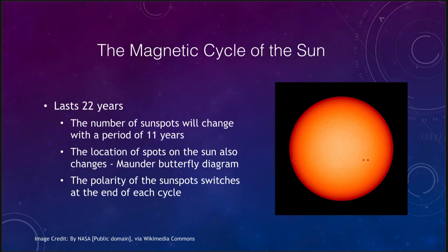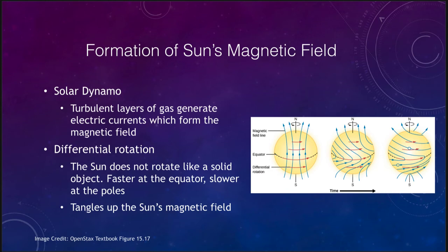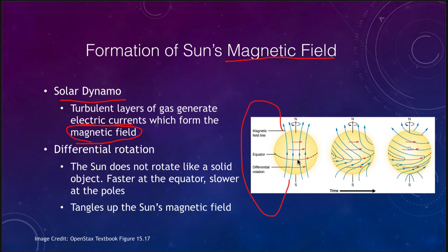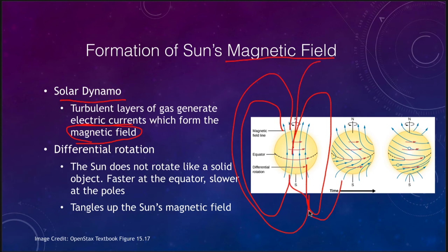Let's look a little bit at how this works — what is going on inside the sun that is actually causing this to occur. The sun's magnetic field, which is the underlying cause of all of this activity, is formed by what we call the solar dynamo. This is the layers of gas underneath the sun which generate electric currents that, when rotating, form a magnetic field. Normally, a magnetic field looks like this: you have the south magnetic pole and the north magnetic pole, and the magnetic field lines form big loops around, as they do for the Earth.